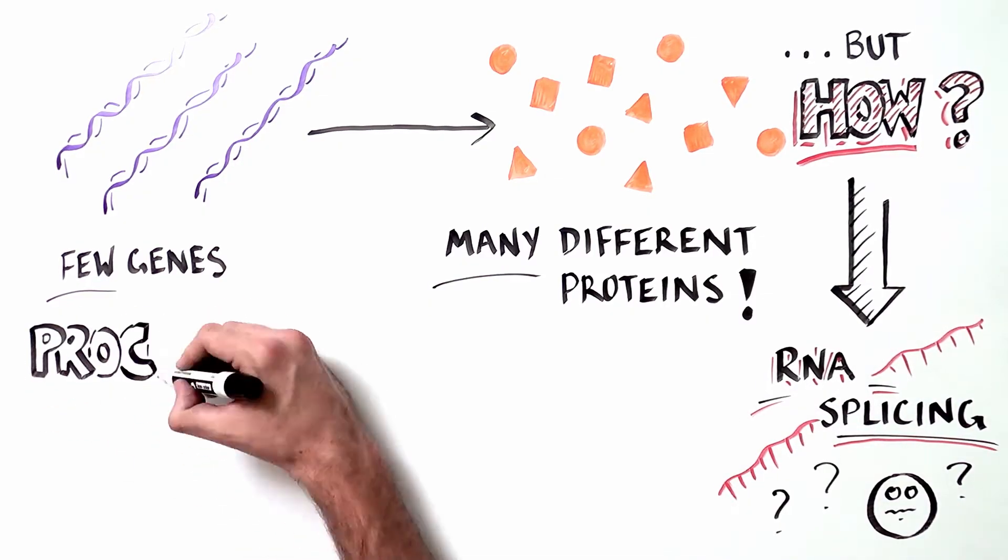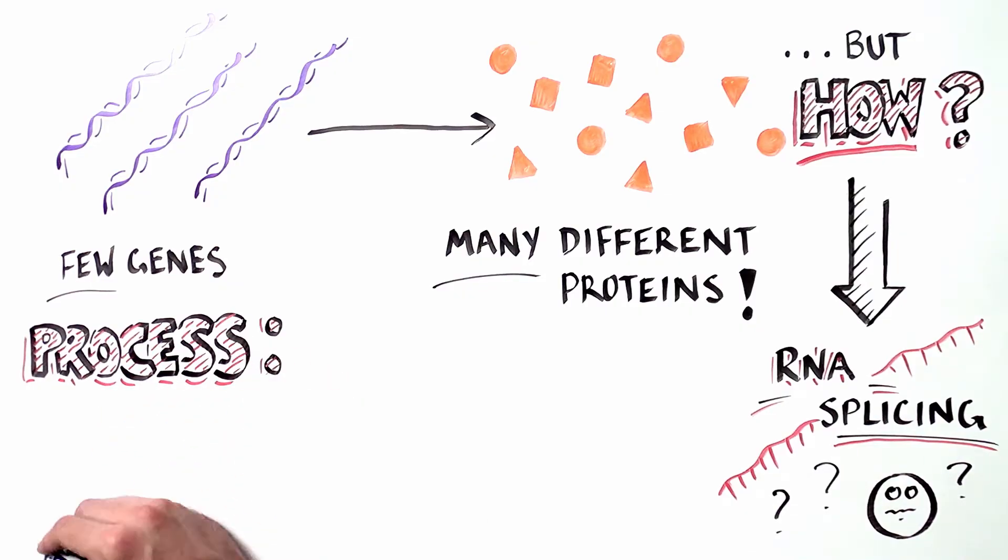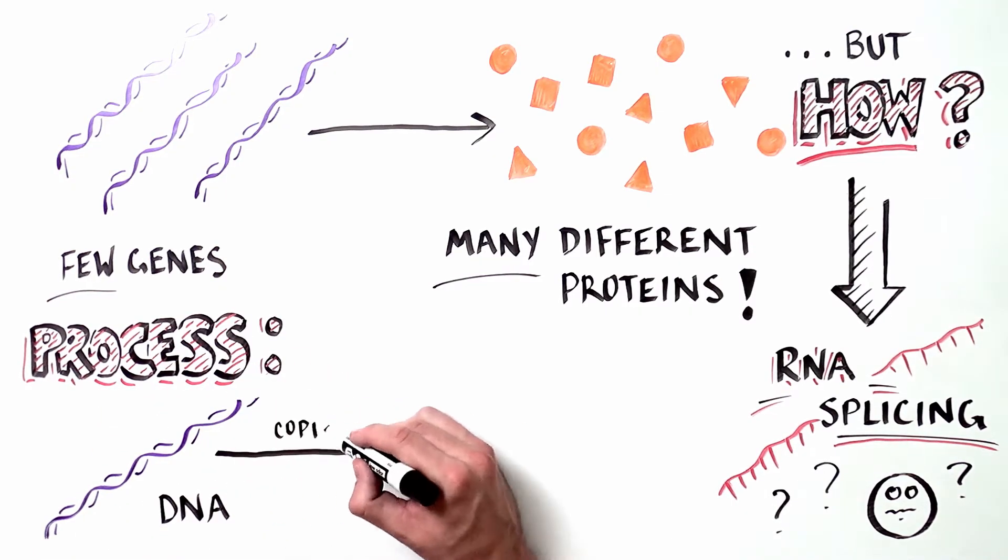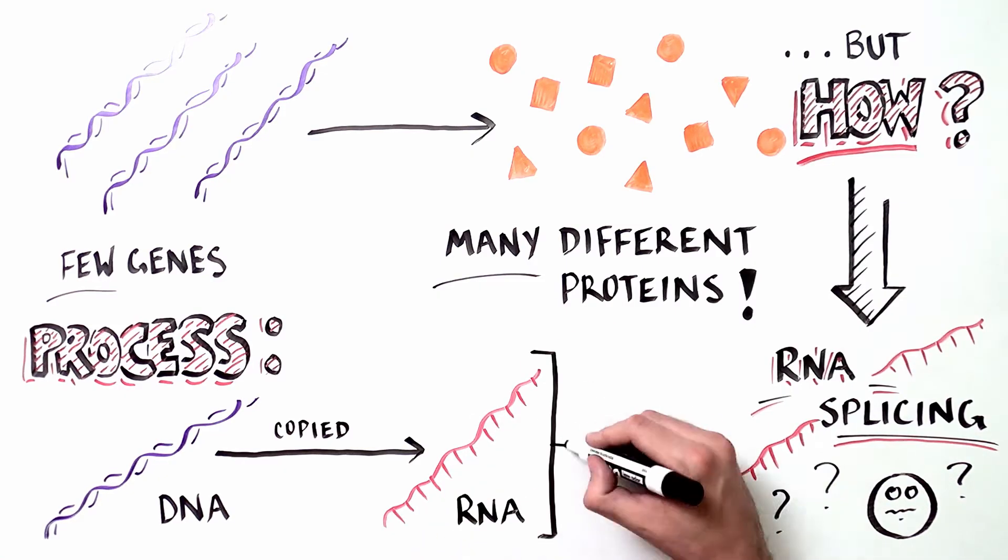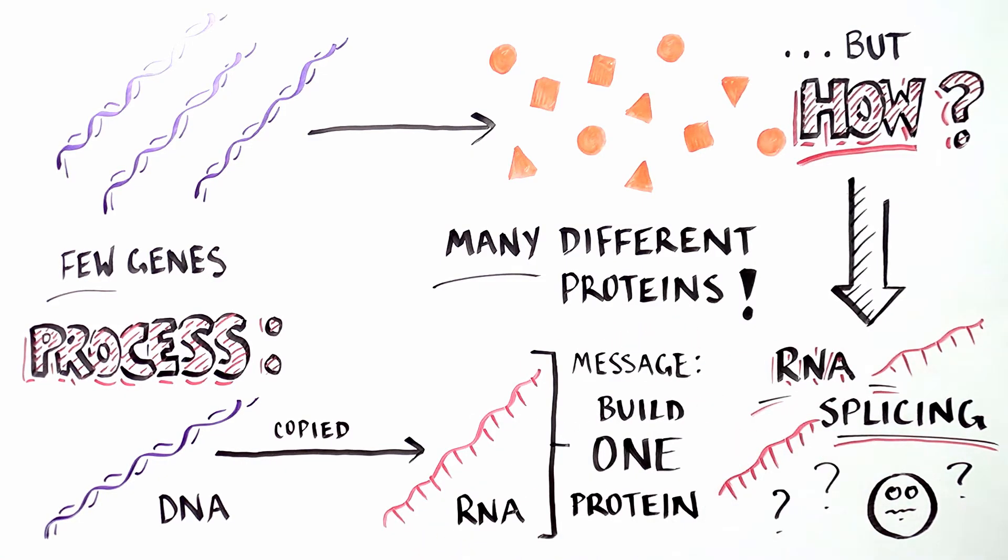The process works like this. A sequence of DNA comprising a single gene is copied. This copy is made of RNA, a molecule related to DNA but more temporary. You can think of this RNA copy as the gene's message. It contains the instructions for making a protein.